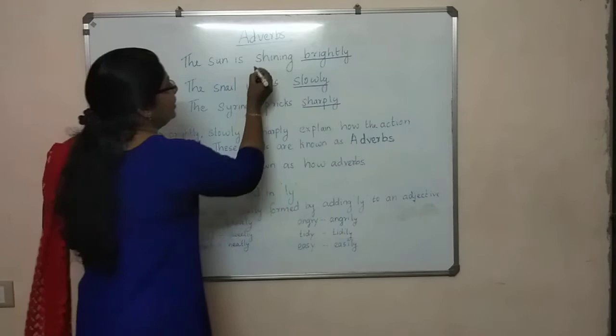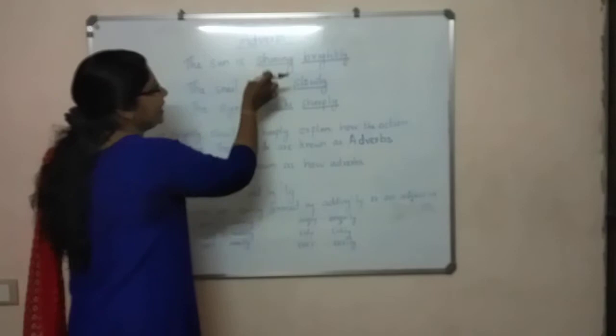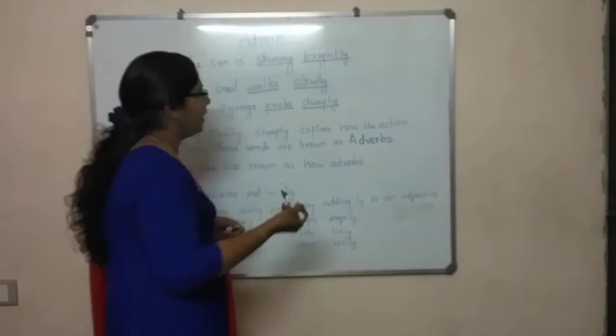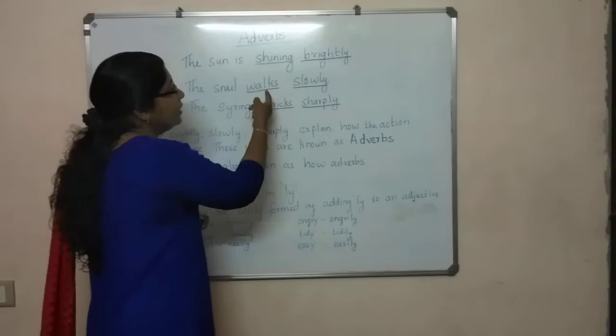So these are the verbs of these sentences. In these sentences, the verbs are: shining, walks, pricks. So these are all action verbs.